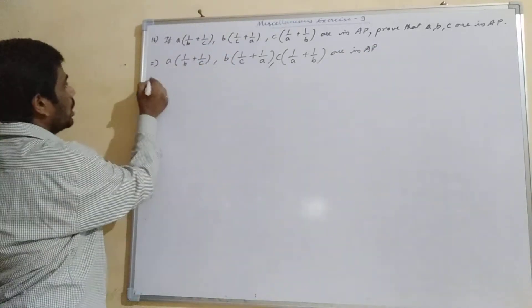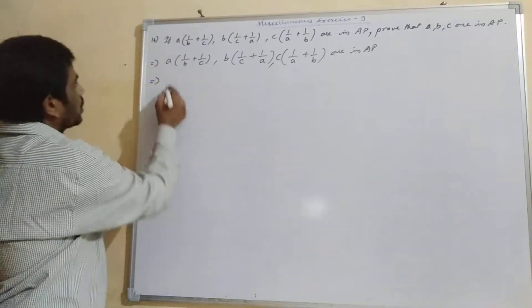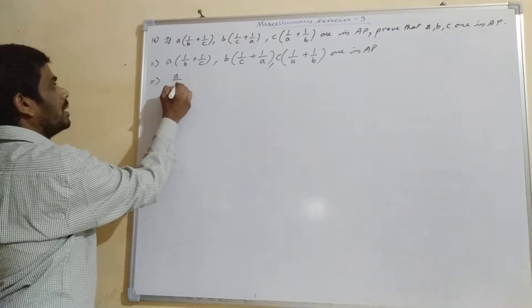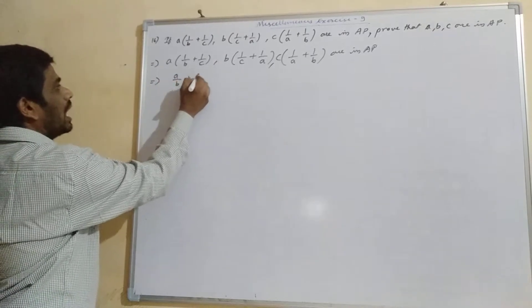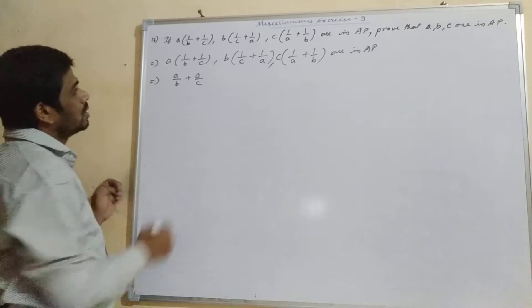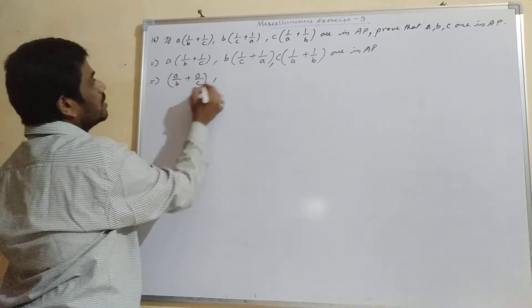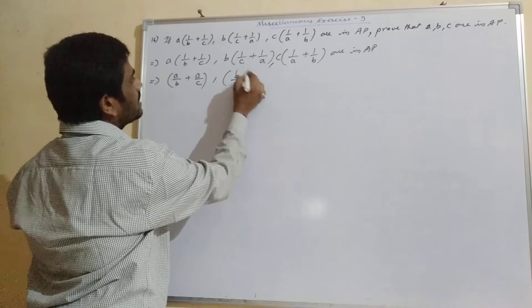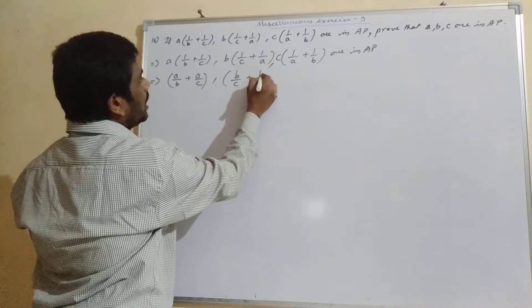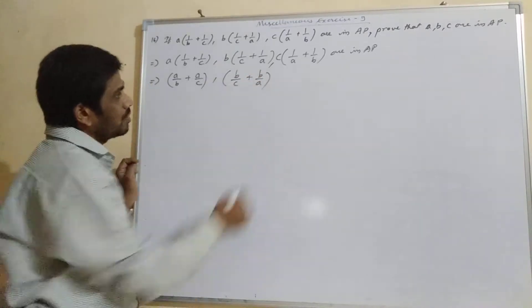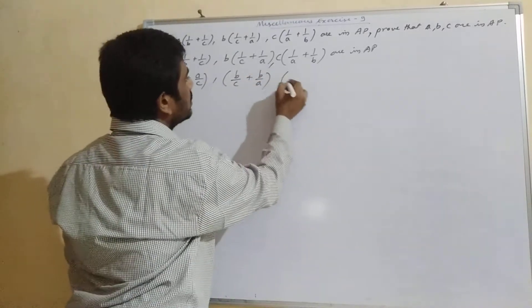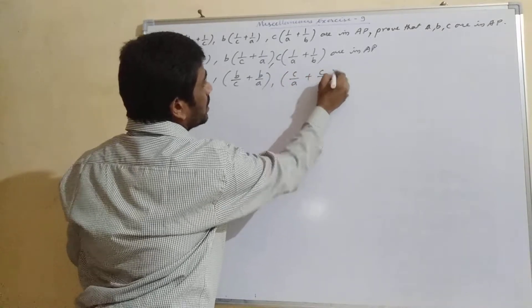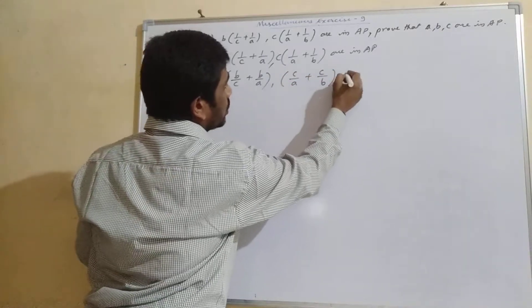So if we multiply inside with A, we will get A/B + A/C. Here we will get B/C + B/A. Here we will get C/A + C/B. That will also be in AP.